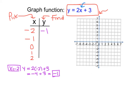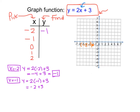We can go over to our graph and plot that point. So we go to x is negative 2, y is negative 1, and we label that on our graph. Then for the second point, x is equal to negative 1. So y equals 2 times negative 1 plus 3, which is negative 2 plus 3, which is 1. So when x is negative 1, y is 1, and we plot that point.